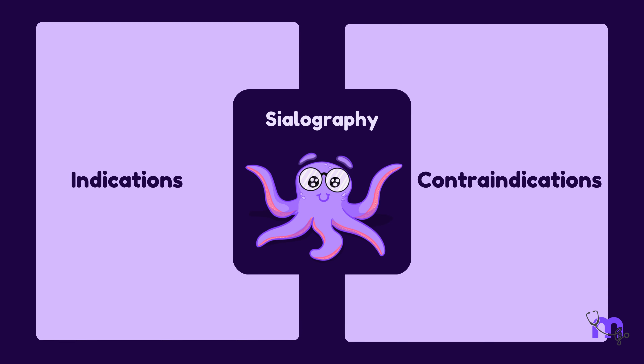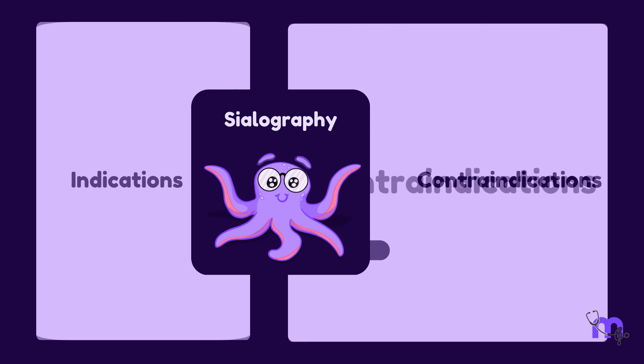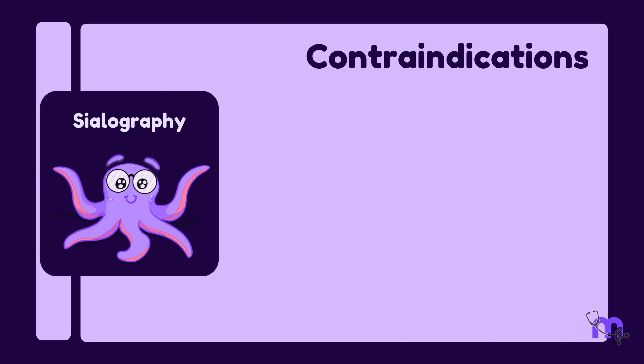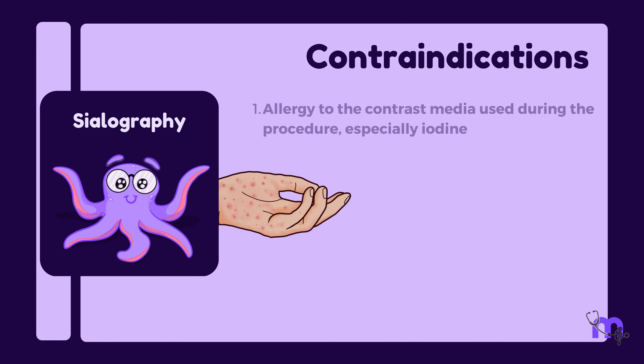The next indication is to detect tumors. Sialography can reveal signs of epithelial breakdown, which can occur with tumors.